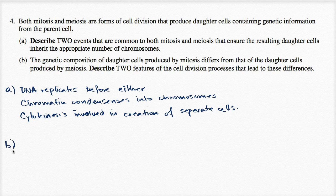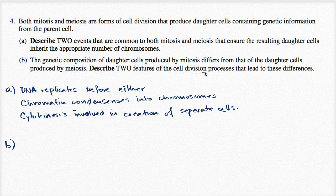Part B: the genetic composition of daughter cells produced by mitosis differs from that of the daughter cells produced by meiosis. Describe two features of the cell division process that lead to these differences.